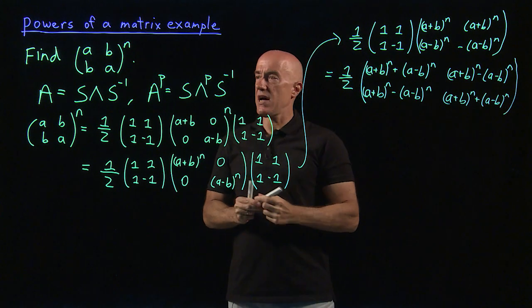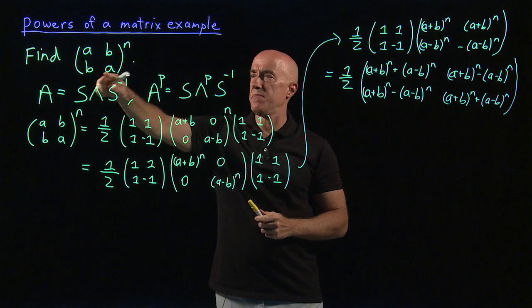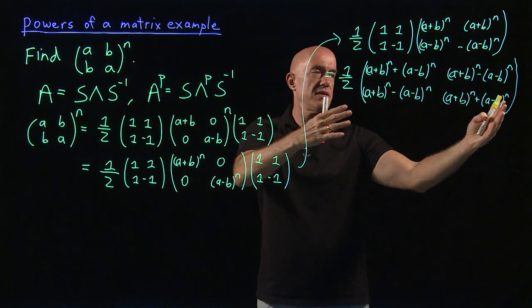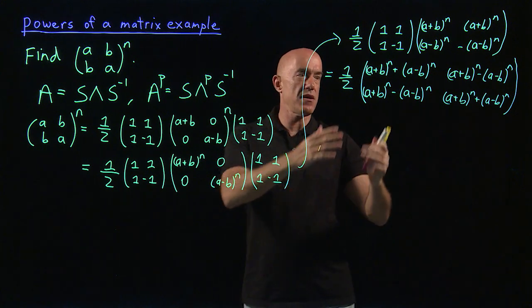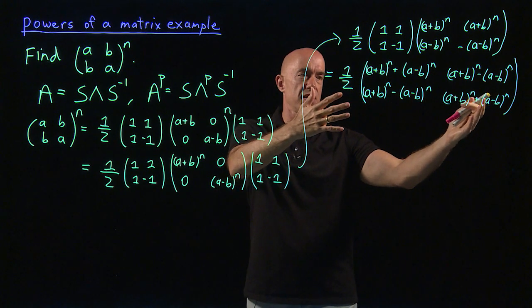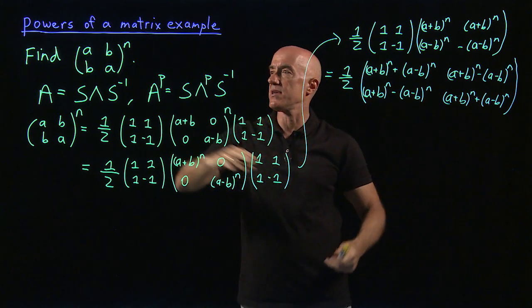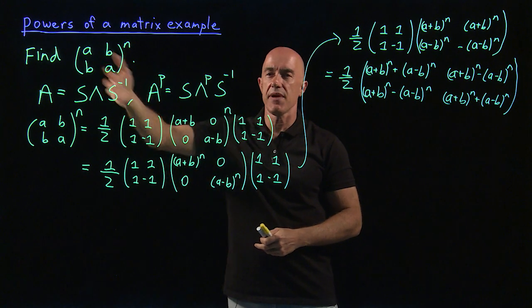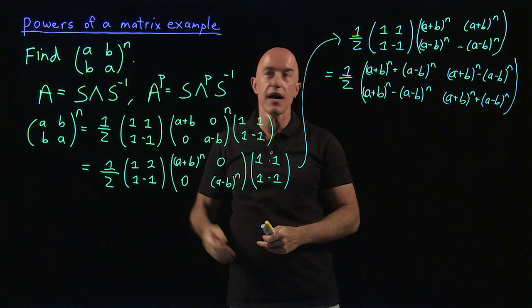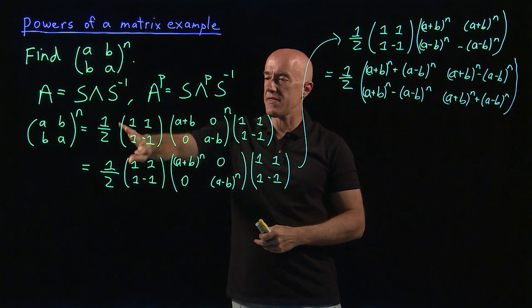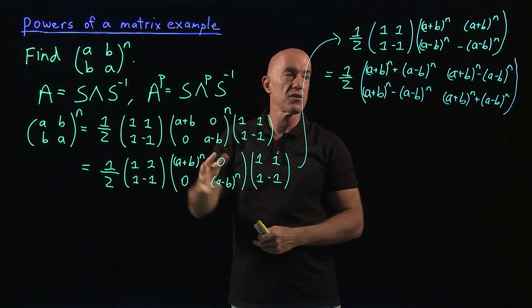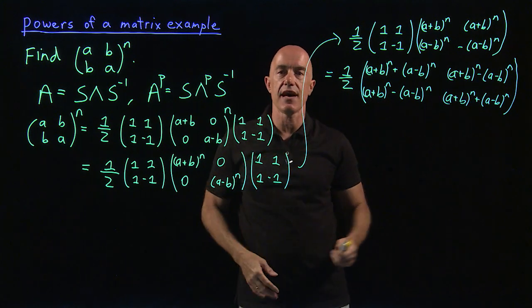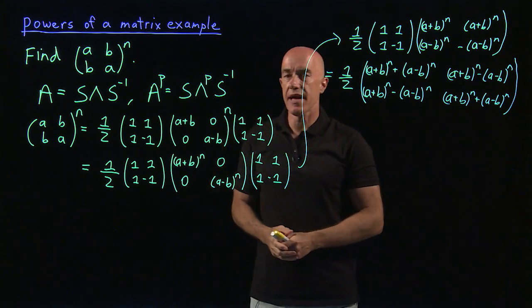So we've found ABBA to the nth is this 2 by 2 matrix. You can imagine N is 1,000, something like this. You're not gonna sit here and compute this matrix times itself 1,000 times, but you can shortcut that process by first diagonalizing it, and then you just have two multiplications.